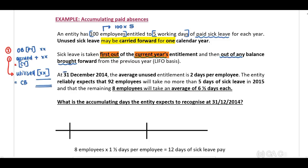At 31 December 2014, the average unused entitlement is two days per employee. The entity reliably expects that 92 employees will take no more than five days of sick leave in 2015, and that the remaining eight employees will take an average of six and a half days each. What is the accumulating days the entity expects to recognize at the end of 2014?